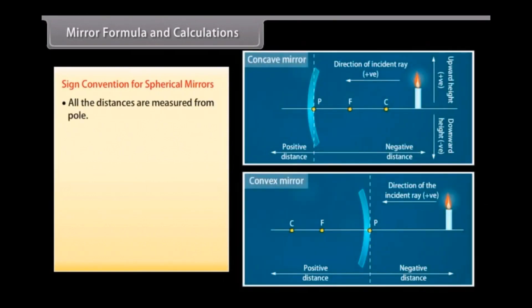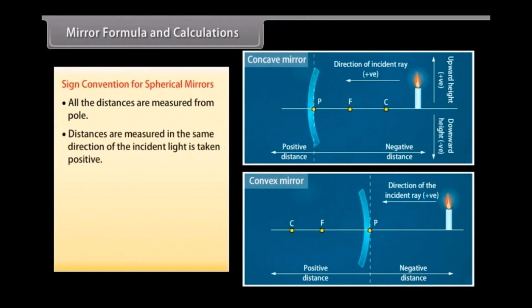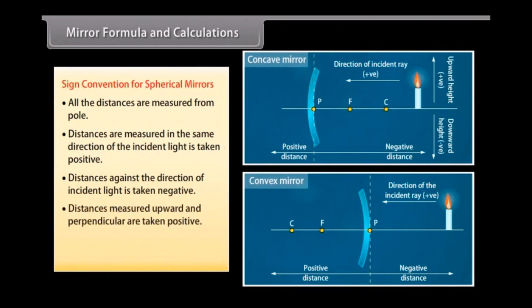Sign convention for spherical mirrors: All distances are measured from the pole. Distances measured in the same direction as the incident light are taken as positive. Distances measured against the direction of incident light are taken as negative. Distances measured upward and perpendicular are taken as positive, and distances measured downward and perpendicular are taken as negative.